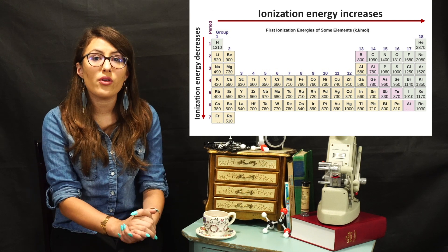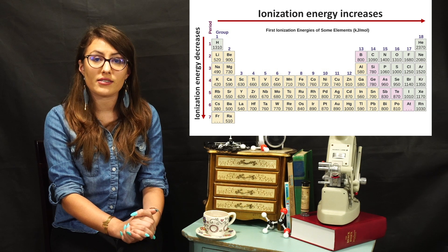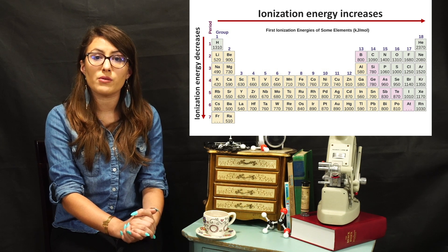As a recap, the lower the ionization energy, the easier it is to remove the electron, whereas the higher the ionization energy, the harder it is to remove.